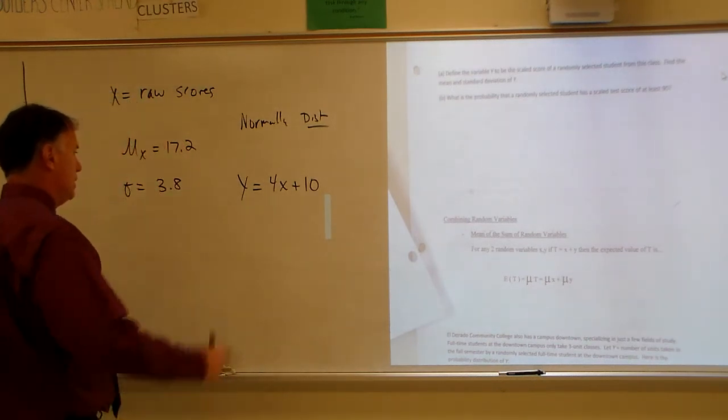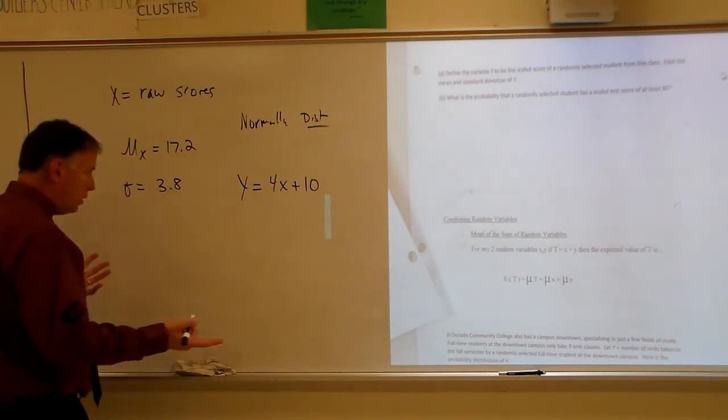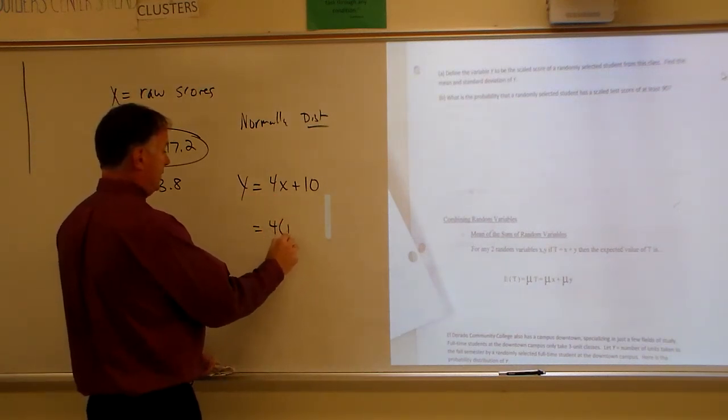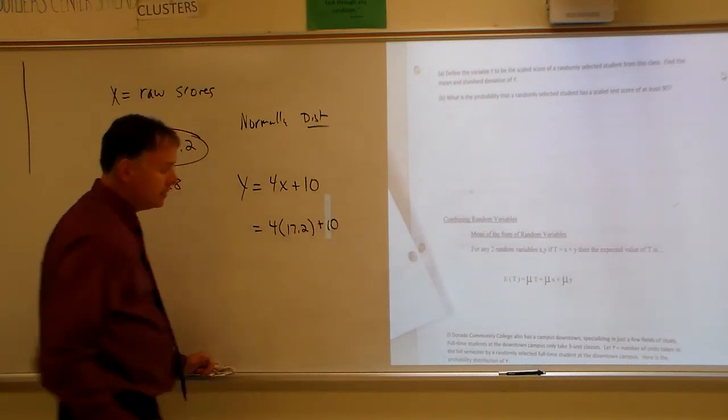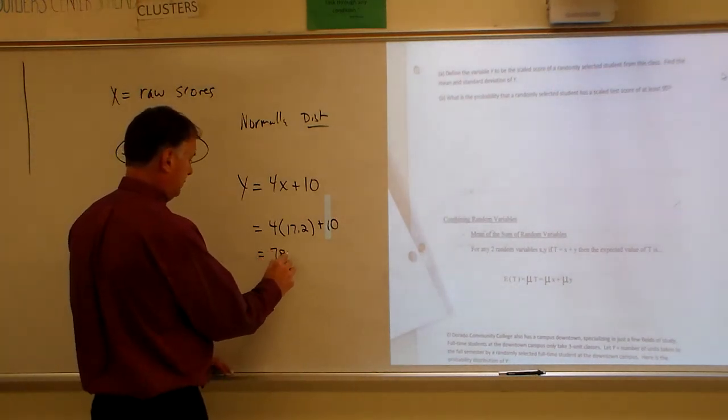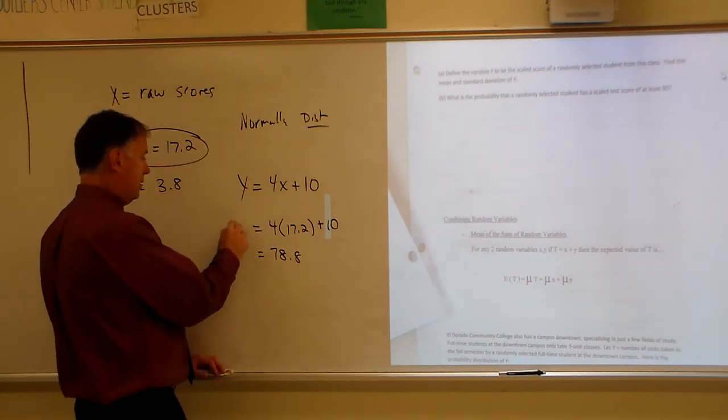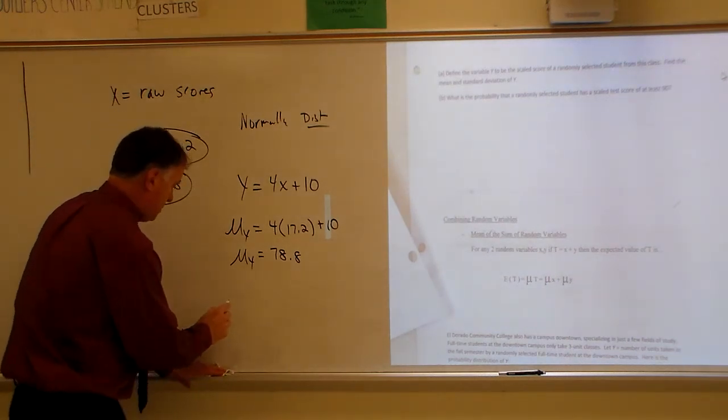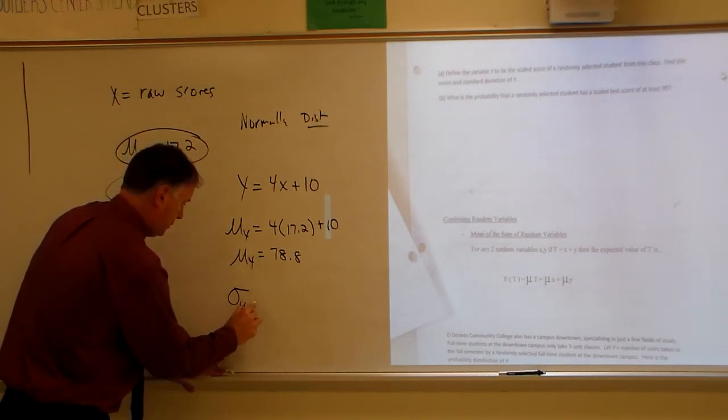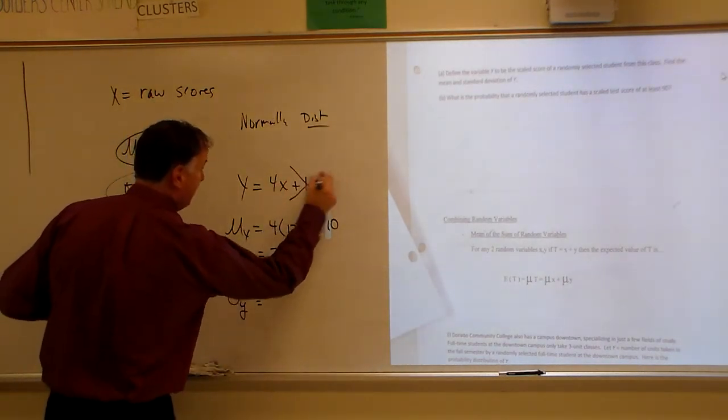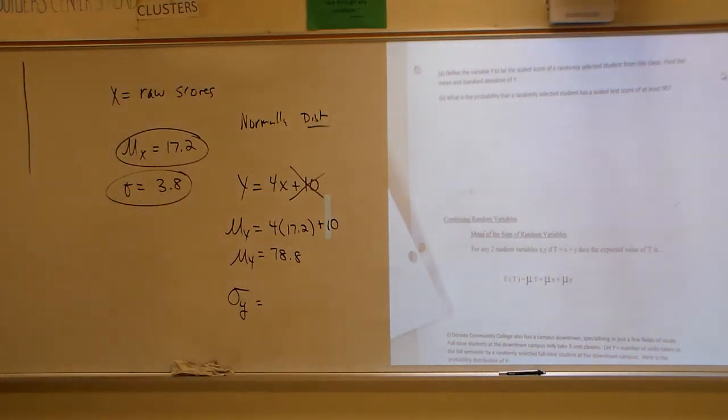Find the mean and the standard deviation. Mean and standard deviation. So here's my mean. Center always changes, right? So I'm going to make this 4 times 17.2 plus 10. 4 times 17.2 plus 10. That's going to be 78.8. That's my new mean, mu y. Now my standard deviation is 3.8. But I don't want to shift it. I only want to scale it. So I don't do this to that. But I do multiply that times 4. So 3.8 times 4 is 15.2.